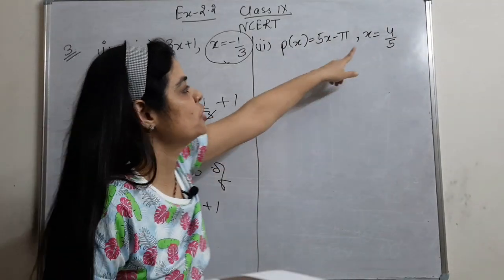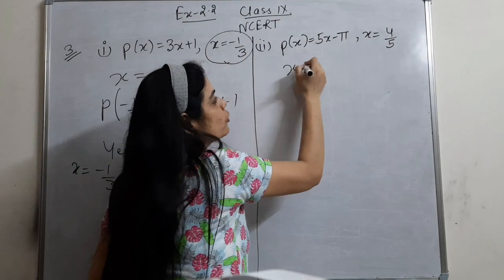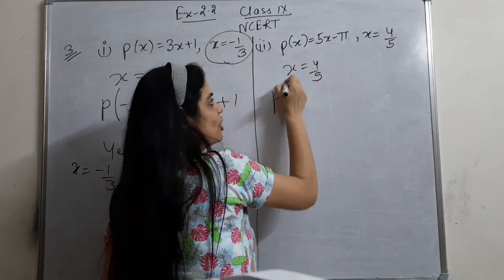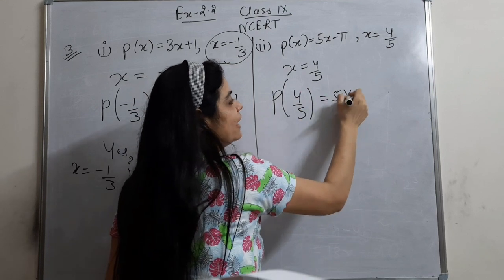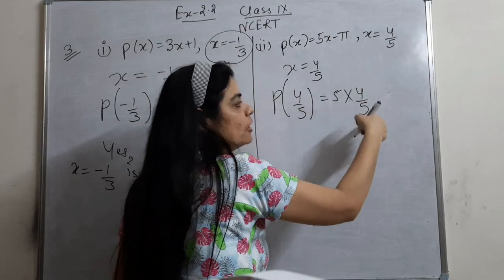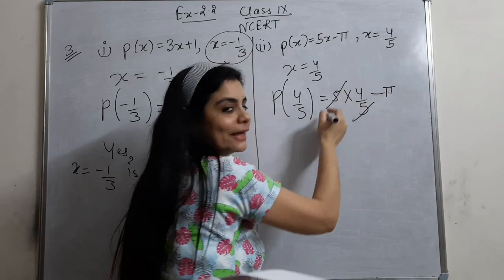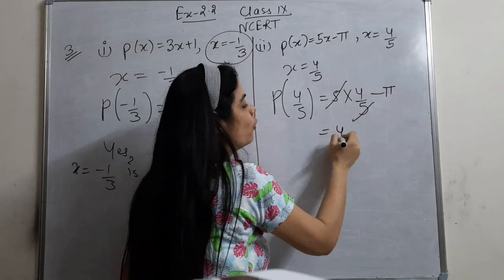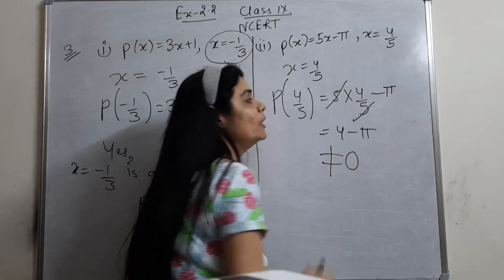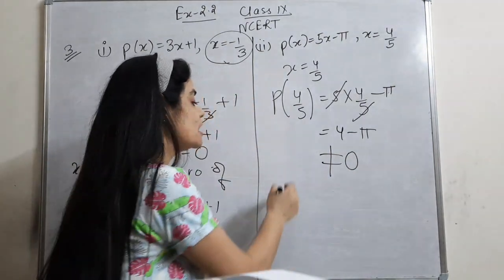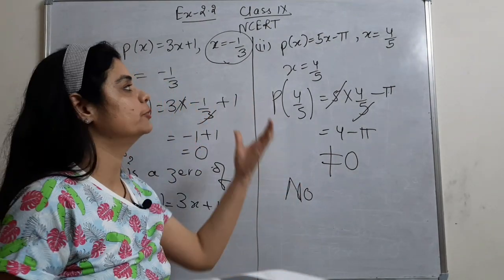Now here we have to check x = 4/5. Put x = 4/5 wherever x appears. So 5 into 4/5 minus π, the 5s cancel, giving 4 minus π, which is not equal to 0. So that means no — x = 4/5 is not a zero of the polynomial.